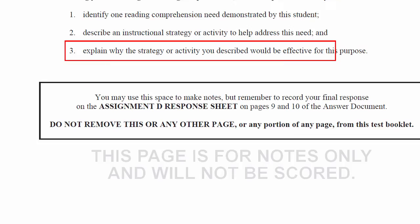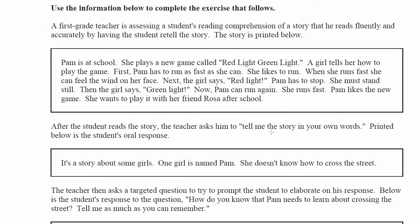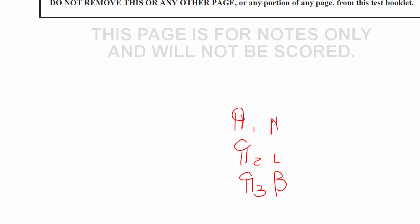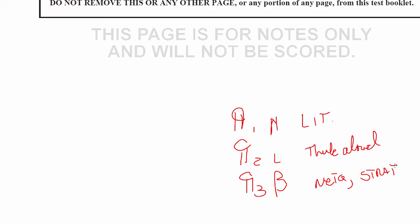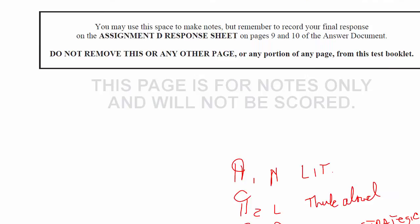So as you go through this and identify the issues the student is having based on their responses, you can simply list these things off. The need you'll see is that literal comprehension is a problem. What kind of lesson would be good for that? I believe it's a think aloud, although any kind of graphic organizer would work — like a story map. Since it's narrative text, a story map would probably be better. And then the benefit of a think aloud has metacognitive benefits — it's strategic and can be applied to other things.